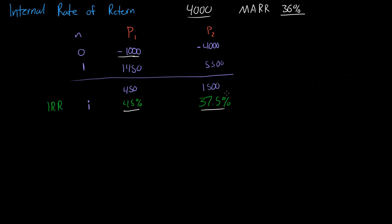What we do is we subtract the bigger cost of the project that has the bigger cost from the project that has the smaller cost. We have P2 minus P1. $4,000, a negative $4,000 minus a negative $1,000. That gives us a negative $3,000. So, now let's look at it as we have $3,000 to invest.